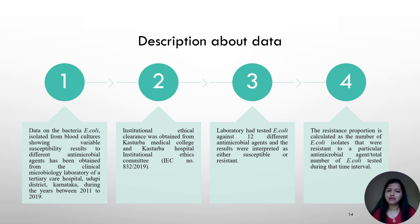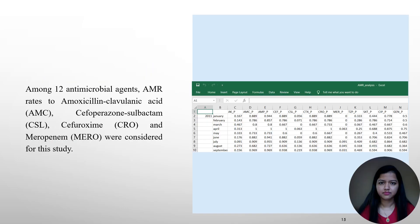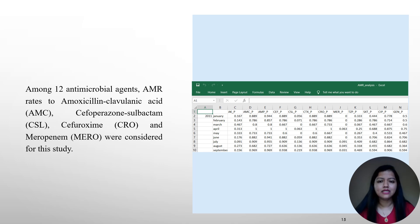For my data, as I am concentrating on antimicrobial resistance rate, I obtained a resistance rate by considering the number of E. coli isolates that were resistant to a particular antimicrobial agent divided by the total number of E. coli isolates during that time interval. Among 12 antimicrobial agents, I concentrated on 4 antibiotics: amoxicillin-clavulanic acid, cefoperazone-sulbactam, cefuroxime, and meropenem. These are the 4 antibiotics for which the resistance rate was in the interval (0,1) where either 0 or 1 is included and which is also time-dependent.